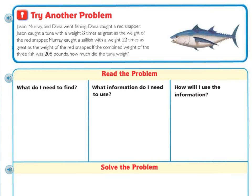Turn the page and let's try another problem. Jason, Murray, and Dana went fishing. Dana caught a red snapper. Jason caught a tuna that weighed three times as great as the weight of the red snapper. Murray caught a sailfish with a weight 12 times as great as the weight of the red snapper. If the combined weight of the three fish was 208 pounds, how much did the tuna weigh?